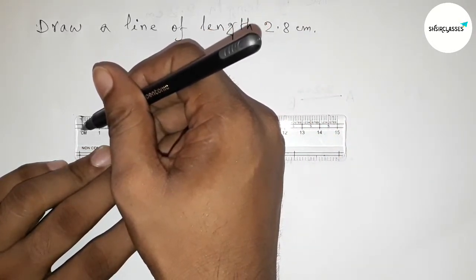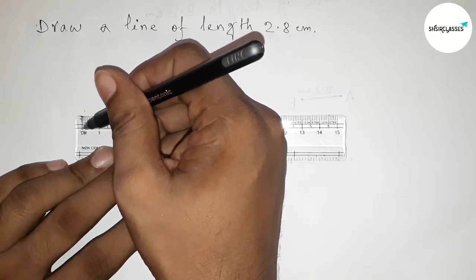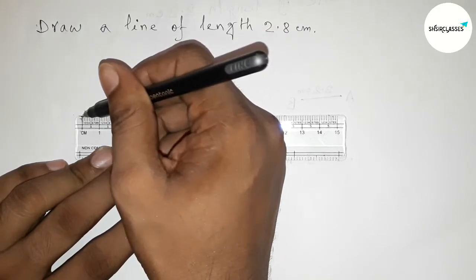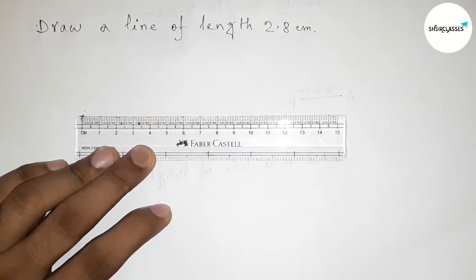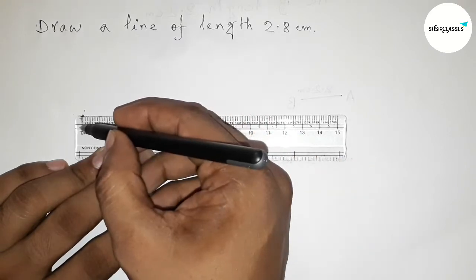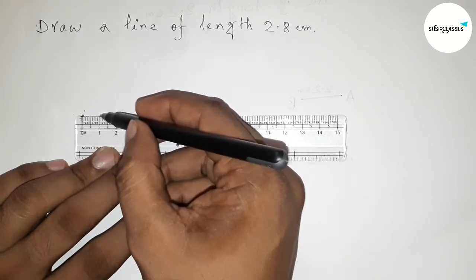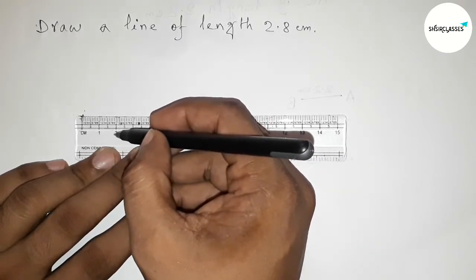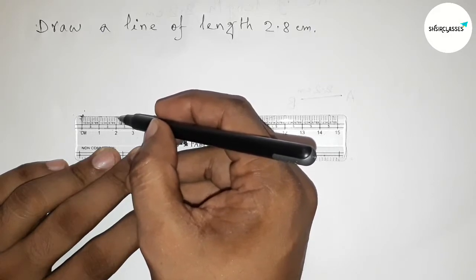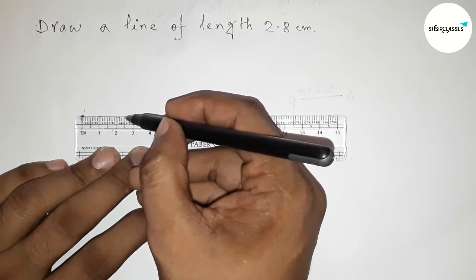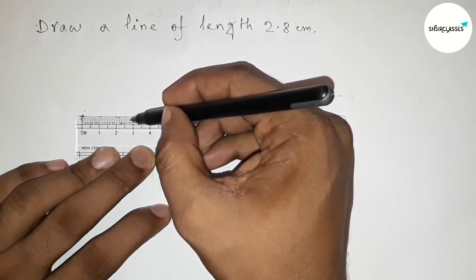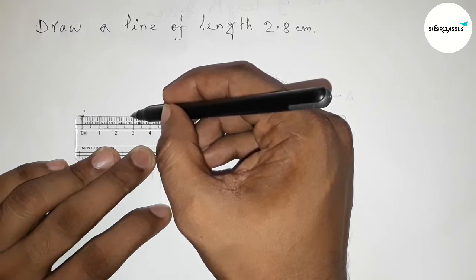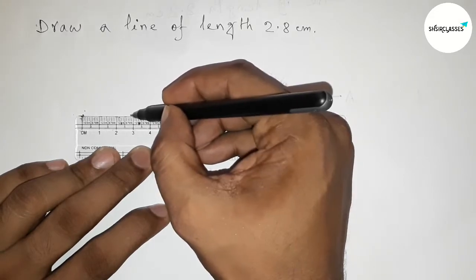And now first counting the length, so this is the starting 0. This is starting 0 and now counting the length, so from 0 this is 1 centimeter, this is 2 centimeters, 2.1, 2, 3, 4, 5, 6, 7, 8. So this is 2.8 centimeter length, so marking this.